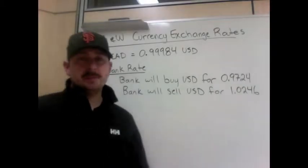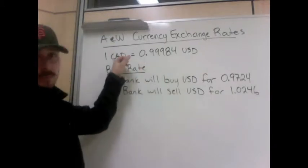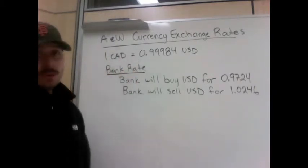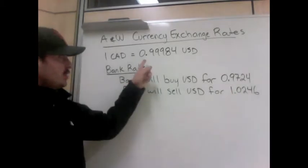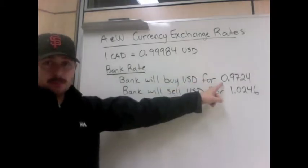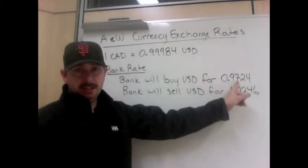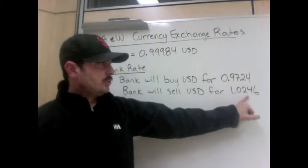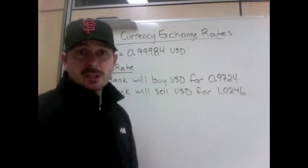Banks are in the business of making money. Today the Canadian to US dollar exchange rate is almost the same — one Canadian is 0.99984 US dollars, so the Canadian dollar is doing slightly worse by a very small amount. But if you go to the bank right now, the bank doesn't exchange at that rate. The bank will buy US dollars for 0.9724, so if you take in one US dollar, they'll give you 97 cents Canadian. The bank will sell US dollars for 1.0246, so it would take you $1.02 and a bit to get one US dollar.